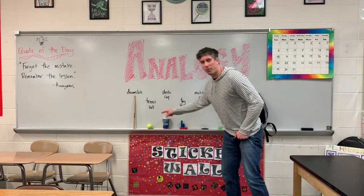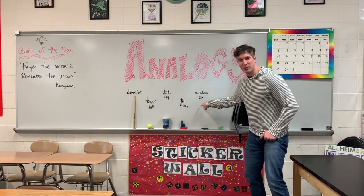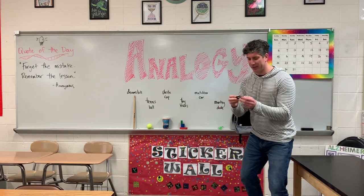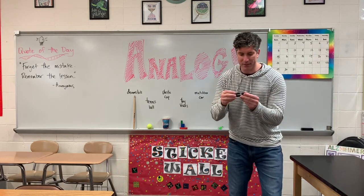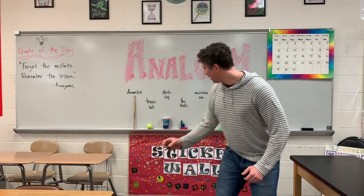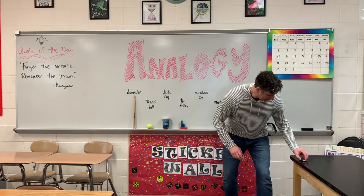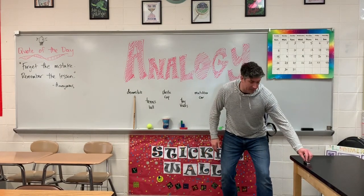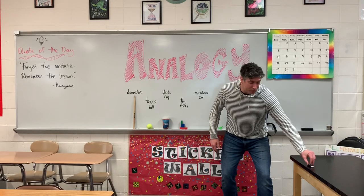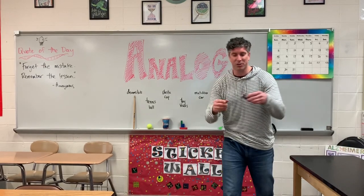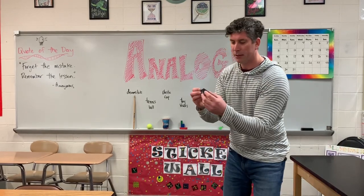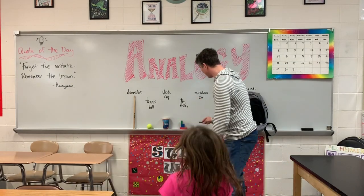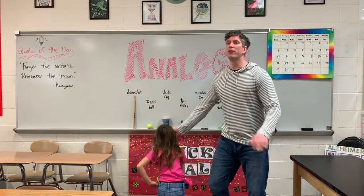Drumstick, tennis ball, plastic cup, toy blocks, matchbox car — and by the way, I love this one. You can kind of see the table; it's like those lowriders with hydraulics that come down and rattle the whole street. You ever see those cars that can bounce with hydraulics? Anyway, it looks a little bit like a lowrider.